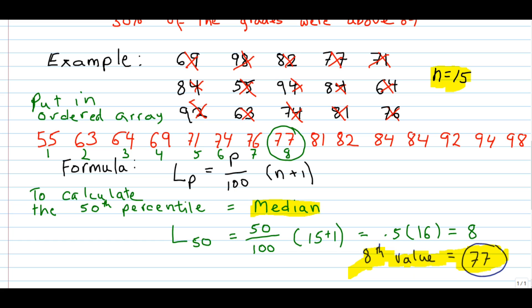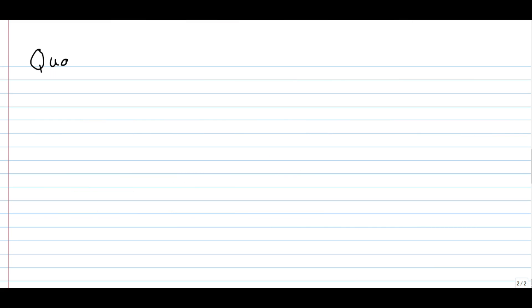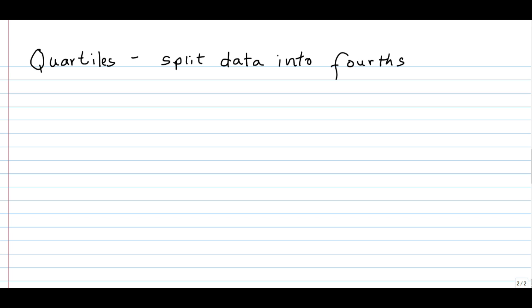So the 50th percentile or the median is equal to 77. This is the point where 50% of the values are below and 50% are above this number. We can also split the data into four parts, with each part representing 25% of the data. When the data is split into fourths, the parts are called quartiles. If one number, the median, splits the data into two parts, then how many values do we need to split the data into four parts?